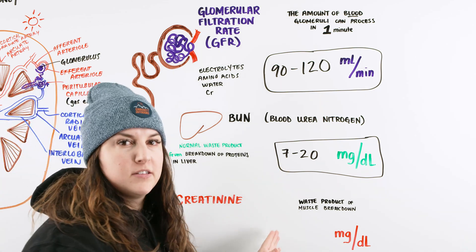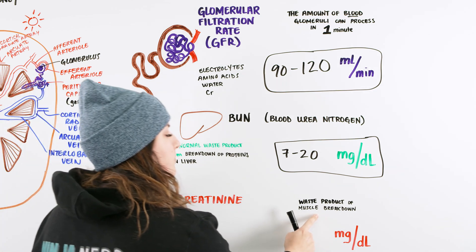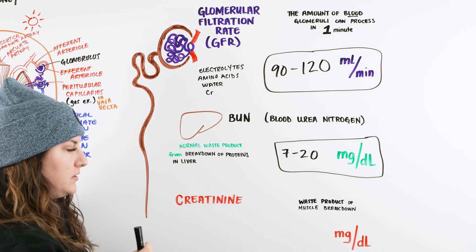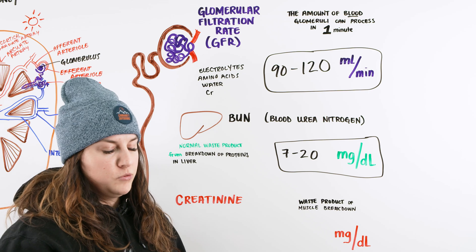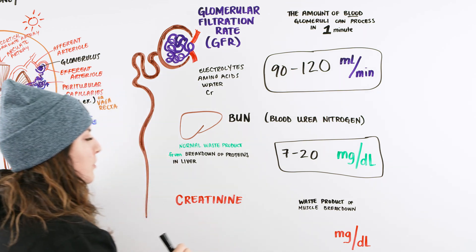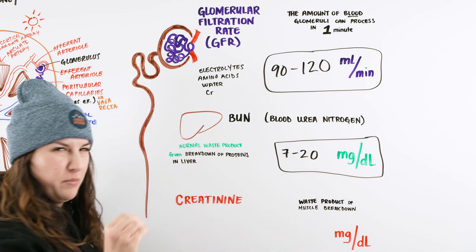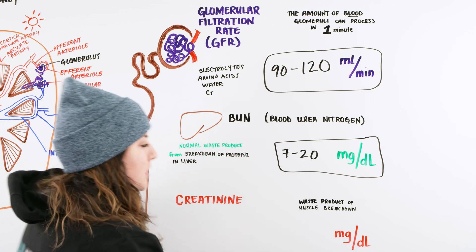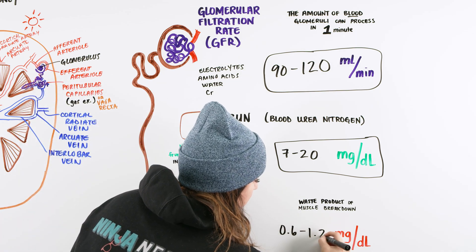Creatinine is going to be your best indicator of kidney function within a patient. And it is a waste product of muscle breakdown. So I always think to myself, creatinine is muscle breakdown. Is it normal or do we really want our muscles breaking down in our body? No. So if we don't want our muscles breaking down in our body, this is going to be the smallest numbers, the things that are really, really minute. So for this one, it's 0.6 to 1.2.